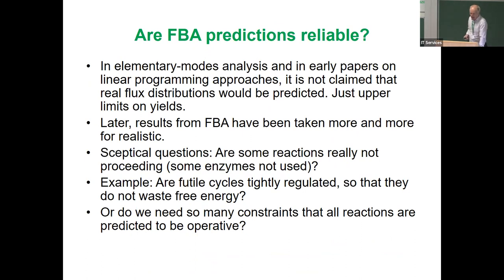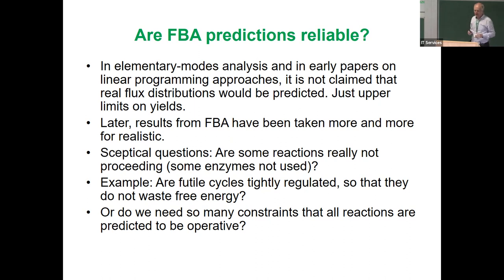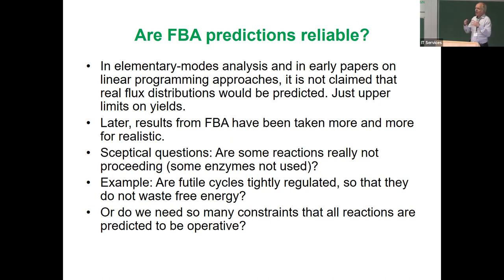Pros and cons: FBA has the big advantage of scaling well with system size — a linear program can be solved for large systems. Elementary modes are hard or even impossible to calculate for large systems. On the other hand, elementary modes give a more comprehensive view: in one calculation you get the best modes for different products.